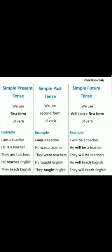For example, simple present tense: I AM a teacher. Simple past tense becomes I WAS a teacher. And simple future tense is I WILL BE a teacher. Similarly, HE IS a teacher, HE WAS a teacher, HE WILL BE a teacher.